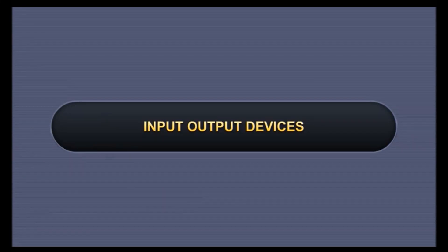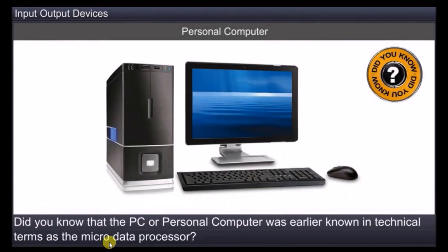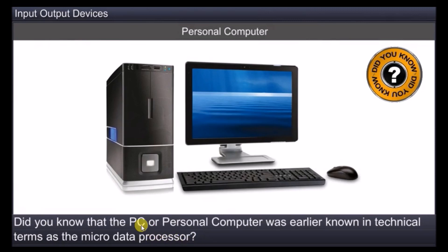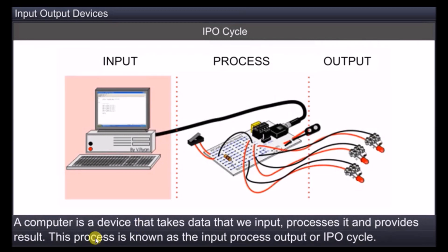In this module, you will learn about input-output devices. The personal computer consists of keyboard, mouse, monitor and CPU, which is earlier known in technical terms as micro-data processor. So the PC, personal computer, was earlier known as micro-data processor.